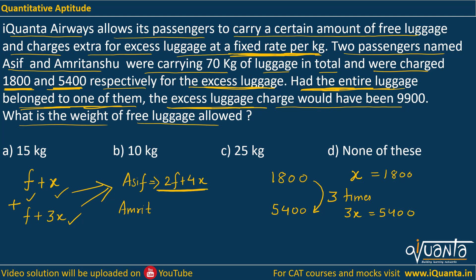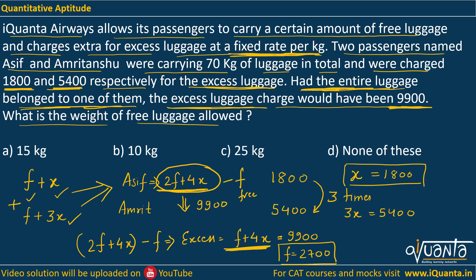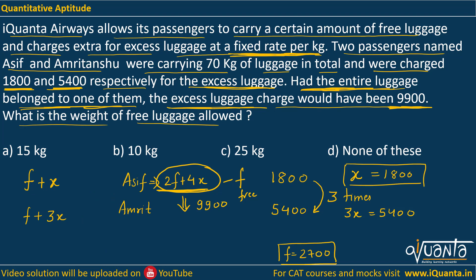If this total luggage of 2f plus 4x belongs to Asif, he will be charged 9,900. Out of 2f plus 4x, f will be free luggage, so the excess luggage will be 2f plus 4x minus f, which equals f plus 4x. For this excess luggage, he is charged 9,900. We already know x is 1,800, so putting it in: f equals 9,900 minus 4 times 1,800, which gives 9,900 minus 7,200 equals 2,700. So f equals 2,700. From here, f equals 1.5 times x.